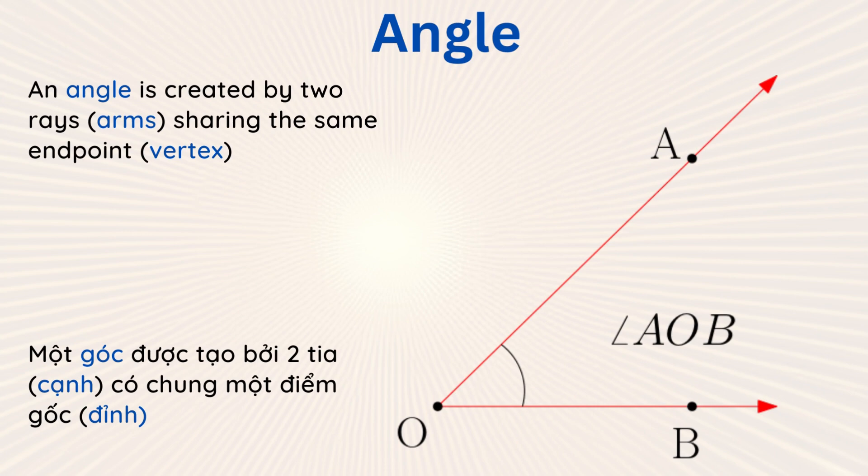An angle is created by two rays (arms) sharing the same endpoint (vertex). Two rays OA and OB share the same vertex O and create the angle AOB, denoted by an angle symbol before the path AOB, as shown in the right picture.